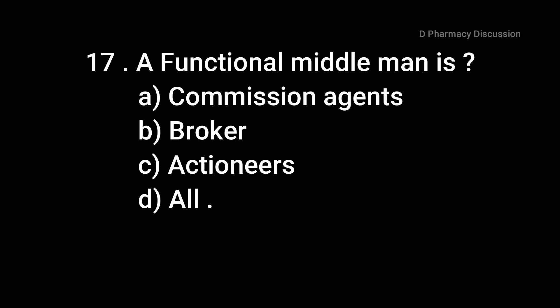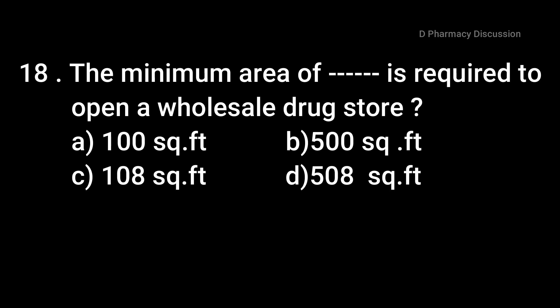Question number seventeen: a functional middleman is — option A: commission agents, B: broker, C: auctioneers, and option D: all. The correct answer is option D, all. Question number eighteen: the minimum area required to open a wholesale drugstore — option A: 100 square feet, B: 500 square feet, C: 108 square feet, and option D: 508 square feet. The correct answer is option C, that is 108 square feet.